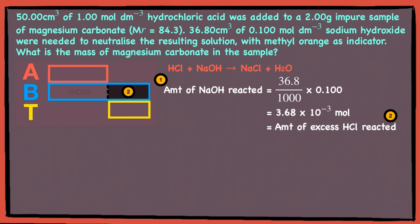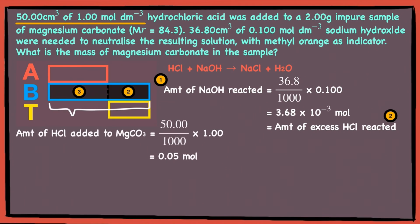Now, we need to find number 3, the amount of B that reacted with the impure sample of magnesium carbonate. Since we have the volume and concentration of the hydrochloric acid at the start, we can calculate the total initial amount of hydrochloric acid, which is the full length of B. To find the amount of hydrochloric acid that reacted with magnesium carbonate, which is box number 3, we take 0.05 mol that we found and subtract box number 2.